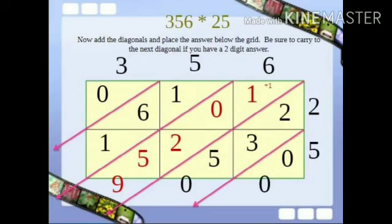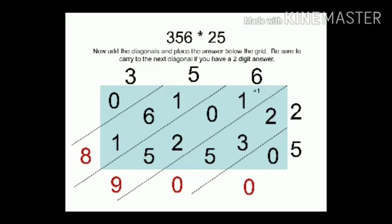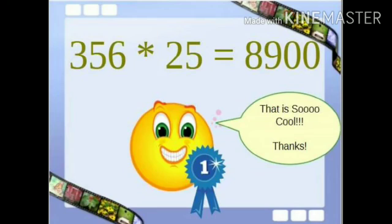Then add the next diagonals. You will get the answer as 9. Then add next diagonals. 1 plus 6 plus 1. So the answer is 8. So 356 into 25 is equal to 8900.